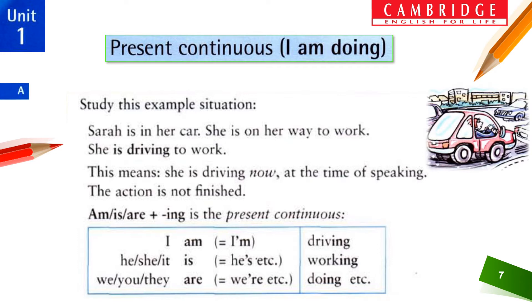We understand Present Continuous Tense can be used at the time of speaking when the action is not finished — which means the action is happening right now. Structurally, the form is: am/is/are + verb + ing. I am driving, he is driving, she is driving. The pronouns are: I, he, she, it, we, you, they. Am, is, are are auxiliary or helping verbs. Examples: I am driving, he is working, she is working, we are doing, you are doing, they are doing.